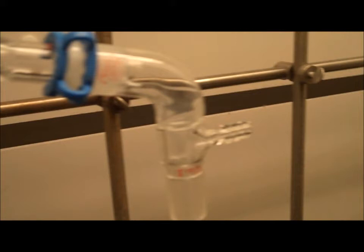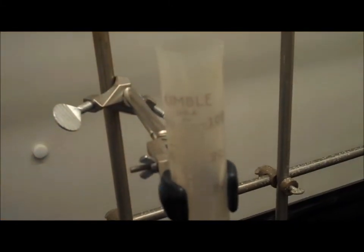Here we have the condenser. Water should be flowing out through this tube and flowing into this tube. Here we have the spout, which will pour your distillate into your graduated cylinder.